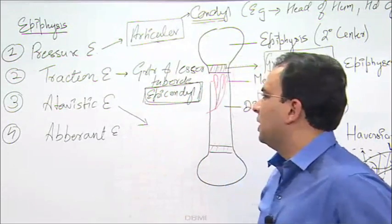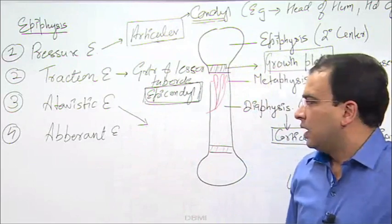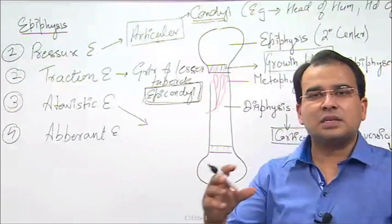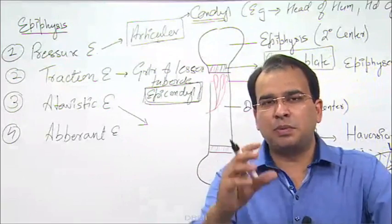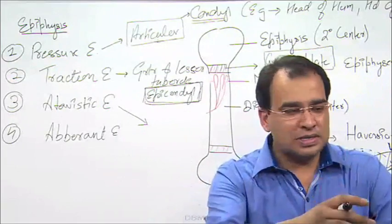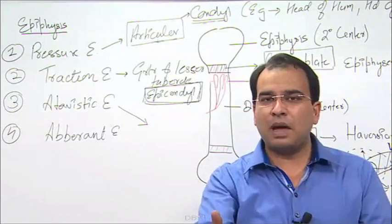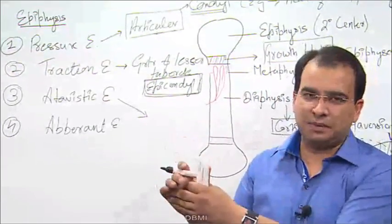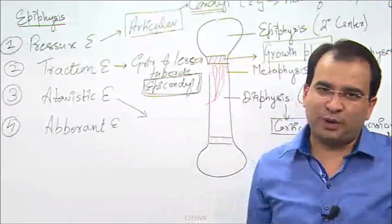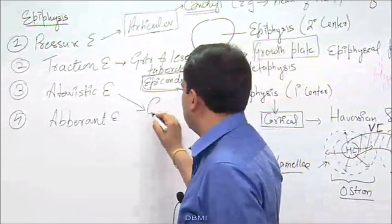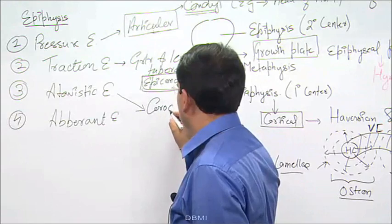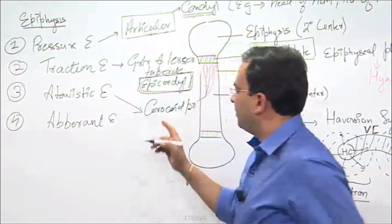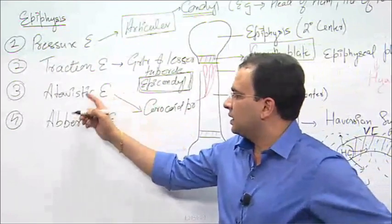Next in the line we have atavistic epiphysis. What is atavistic epiphysis? What is atavism? Atavistic epiphyses are those epiphyses which probably are a different bone or a separate bone in lower mammals, and then now fused with some other bones and residing with them. The coracoid process is a very good example of atavistic epiphysis.